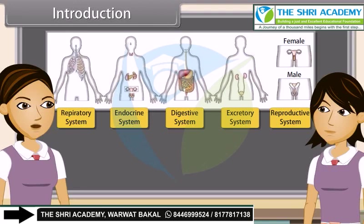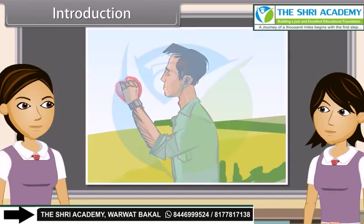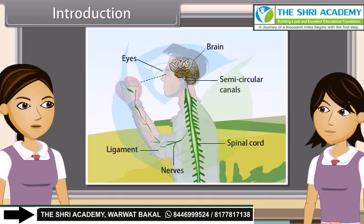In each system, all the organs work together so that the whole system can work properly. In other words, all the organs of a system coordinate with each other so that the system can work properly. Coordination is the working together of the various organs in a systematic manner so as to produce a proper reaction to the stimulus.